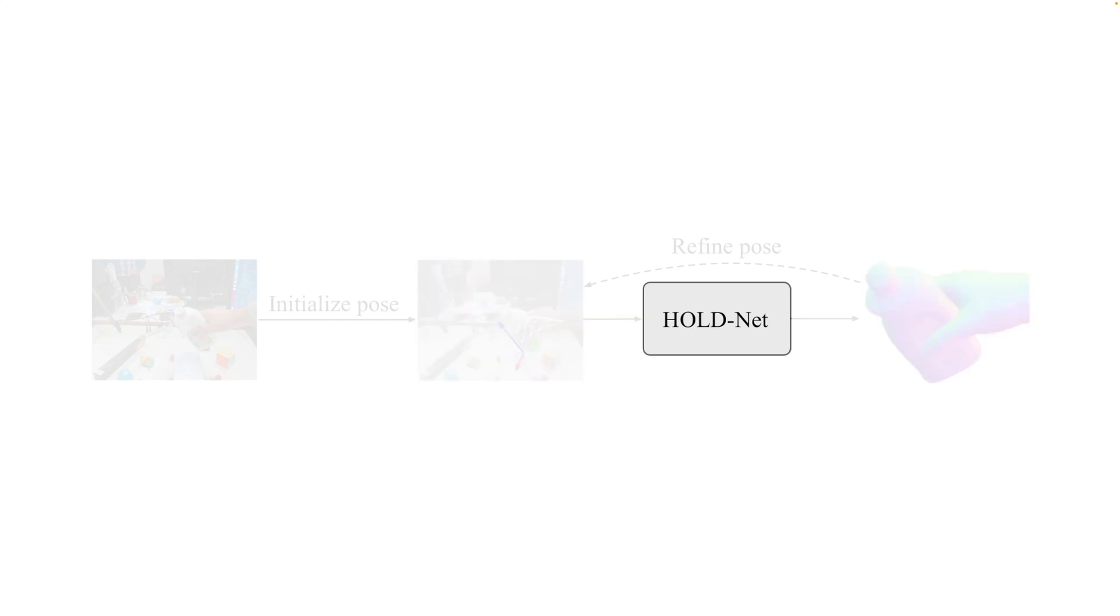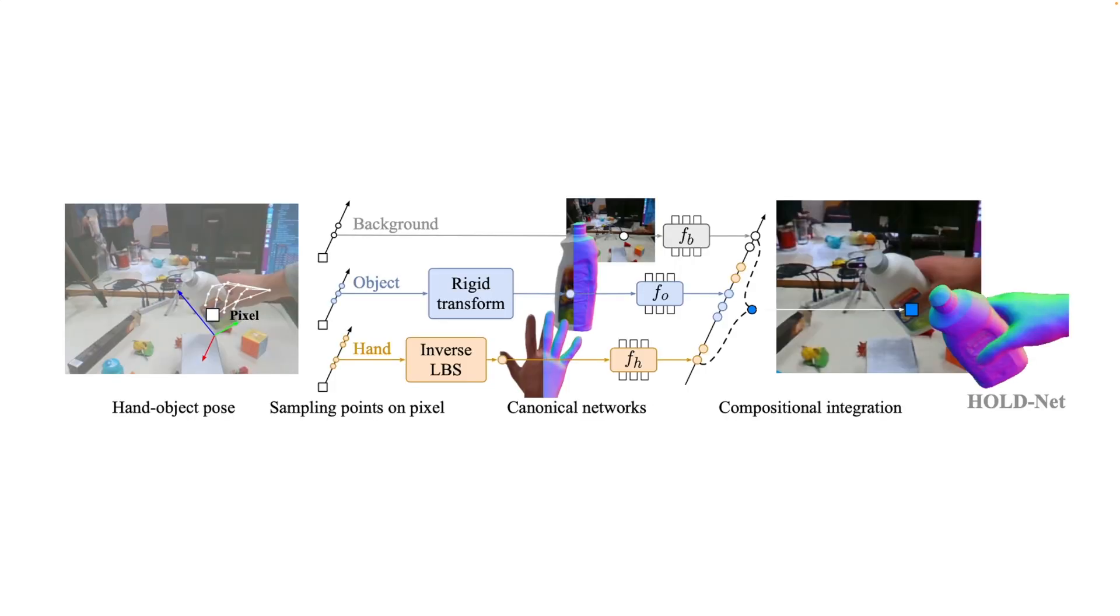Now we delve into HoldNet, our compositional model. HoldNet consists of a dynamic background model, an object model, and a hand model. Given a hand pose, an object pose, and a target pixel from an input image, we cast a ray from the camera and sample 3D points along the ray for each model. We then map the samples in the observation space to the canonical space based on the input hand and object poses.